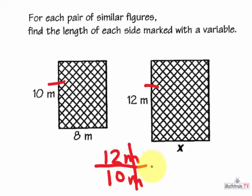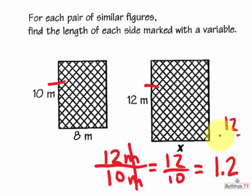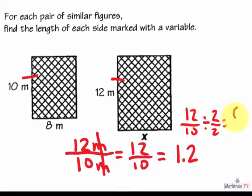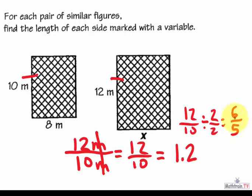Meters cancel. I have 12 over 10, which is the same as 12 tenths or 1.2. Or if you wanted to see that all out, I could divide that by 2 over 2 and get 6 over 5. That's the same as 1.2.